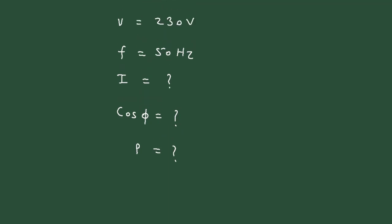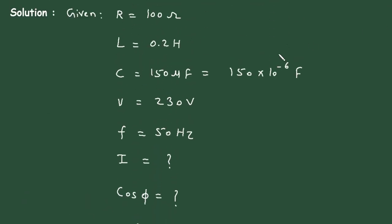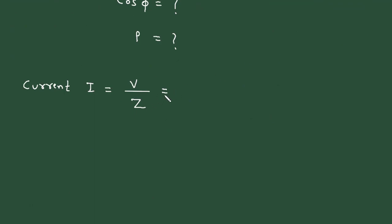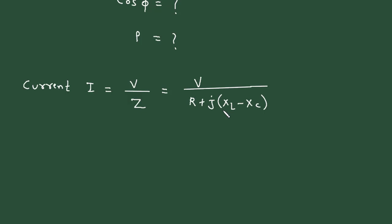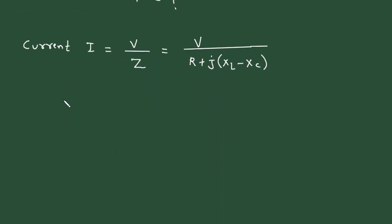So first of all, let's find current I. To calculate current I, the formula is I = V / Z. We have the value of voltage V = 230 volt, but we don't have the value of impedance Z. The formula for impedance Z is R + J(XL − XC). We need to first find XL and XC since we have inductance and capacitance but not their reactances.